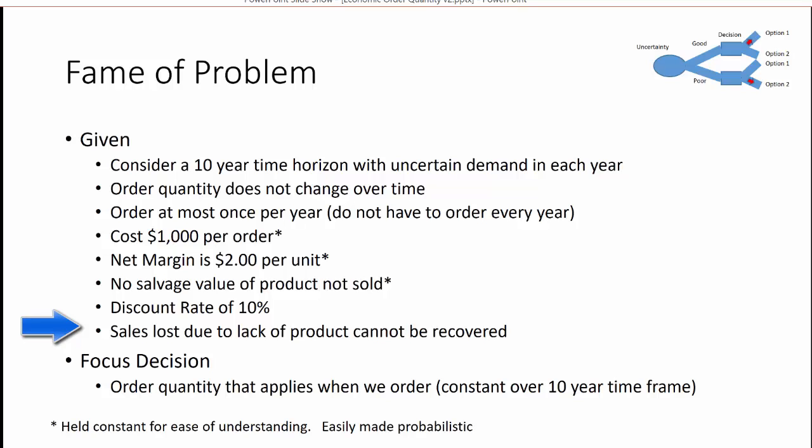In other words, we can't say we'll promise it to you the following year. So what is our focus decision? We need to determine what is the optimum order quantity that applies when we order. Remember, this is going to be constant over a 10 year time frame.